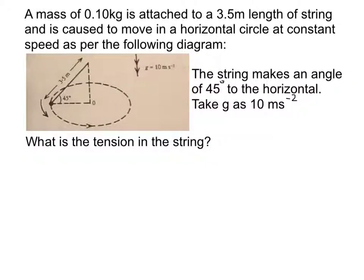Here we have an old HSC question from the mid 80s. We have a mass of 0.1 kilogram attached to a light piece of string which is 3.5 meters long, and it's swinging around in a horizontal circle with constant speed. The string makes an angle of 45 degrees to the horizontal, and we can take G as being 10 meters per second squared. What is the tension in the string is the first part of this question.